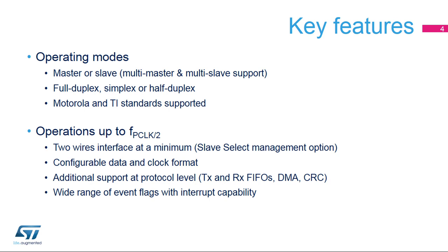The STM32 SPI offers various operating modes that are explained in more detail in this presentation. The communication speed can't exceed half of the internal bus frequency, and a minimum of two wires is required to provide the serial data flow synchronized by clock in a single direction. An optional hardware slave-select control signal can be added. The data size and transmit shift order are configurable, as well as the clock signal polarity and phase. At the protocol level, the user can use specific data buffers with an automatic cyclic redundancy check, or CRC calculation, and transfers through the DMA controller. There are a wide range of SPI events that can generate interrupt requests.